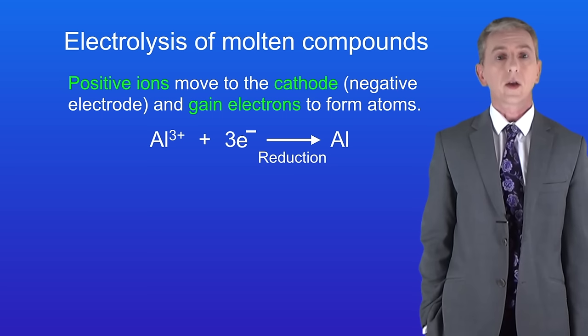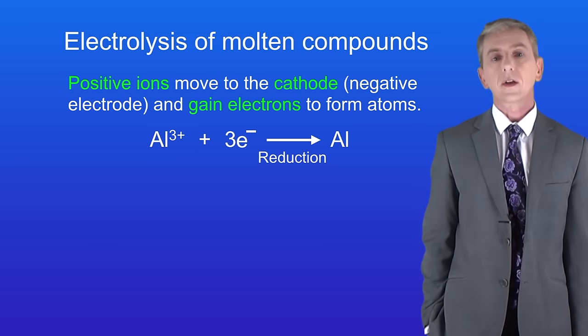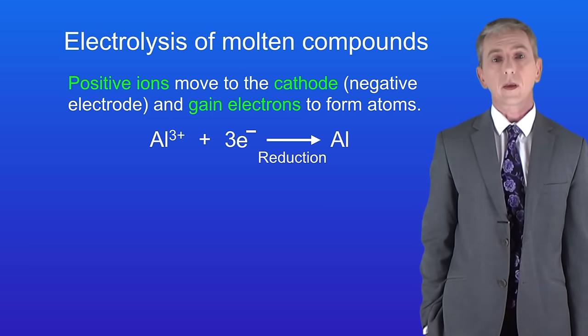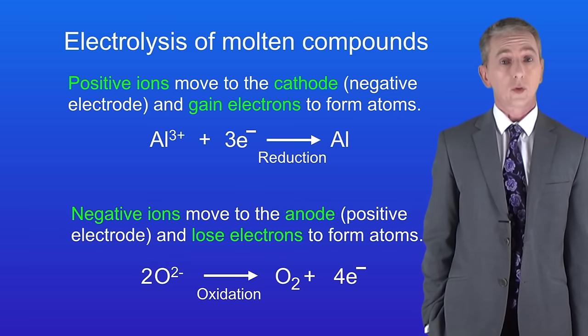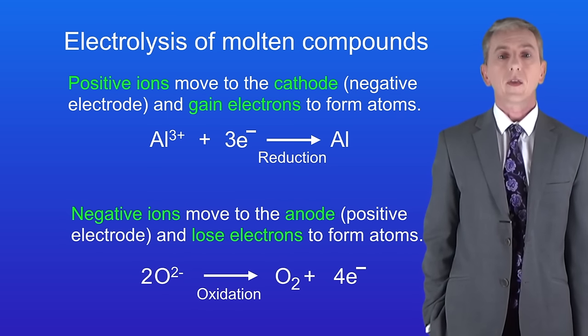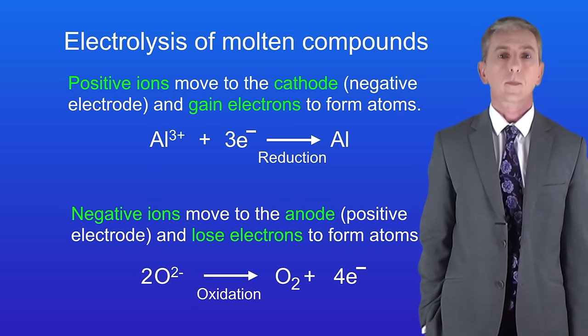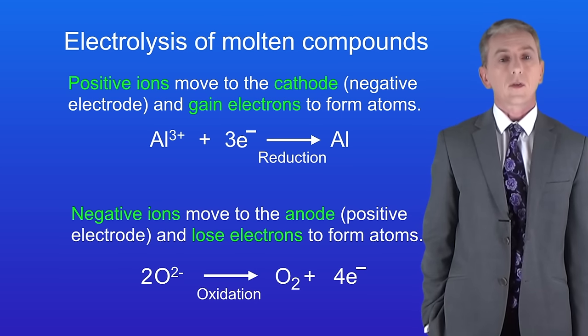We saw that positive ions move to the cathode which is the negative electrode. Here they gain electrons and they form atoms. Negative ions move to the anode which is the positive electrode and here they lose electrons to form atoms.